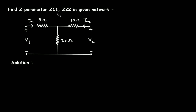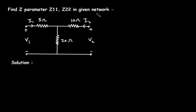Find Z parameters Z11 and Z22 in the given network. Here in this network you have to find Z parameters. As we can see, it is a two-port network. It has four terminals 1, 2, 3, and 4, forming port 1 and port 2 — the input port and the output port. This is a T network and we have to find Z parameters of this network.